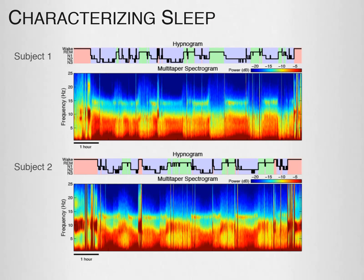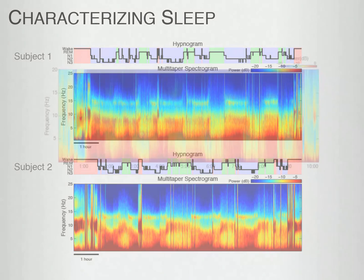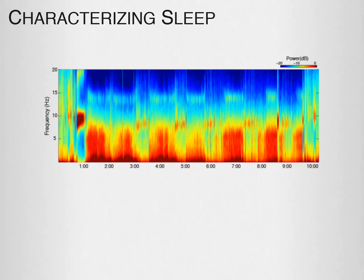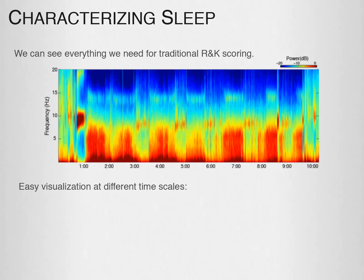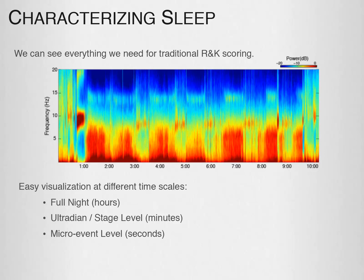Here are a couple of hypnograms and spectrograms from two different test subjects. You can observe that while there is some heterogeneity between them, overall you can see common repeating patterns that align with the traditional sleep scores of wake, REM, and non-REM sleep. With these multi-taper spectrograms, we can see everything we need for traditional RNK scoring, and they provide a means for easy visualization at different time scales — whether a full night on the scale of hours, ultradian or stage level on the scale of minutes, or microevent level on the scale of seconds.